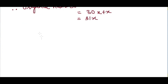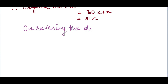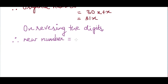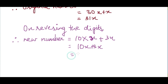Now when we reverse the digits, the digit in the tenth place goes to the units place and the units digit goes to the tenth place. So the new number will be 10 times x plus 3x, which equals 13x.